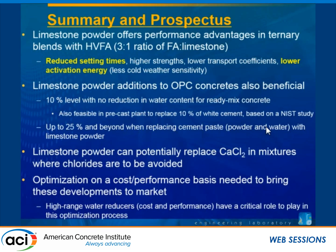In summary, we've looked at limestone in high-volume fly ash applications with a 3-to-1 ratio of fly ash to limestone, which reduces setting times and problems seen with fly ash replacements alone. We've done this at a 10% level with constant water content, replaced cement paste up to about 25% cement reduction, and replaced fine sand to show that limestone can act as a calcium chloride accelerator. Cost analysis still has work to be done in tuning mixtures for economical designs that meet required performance properties.